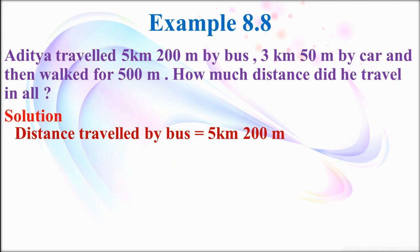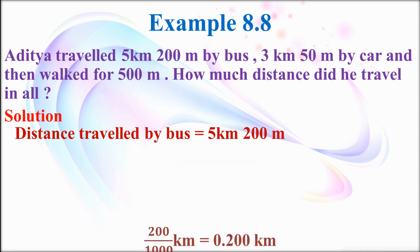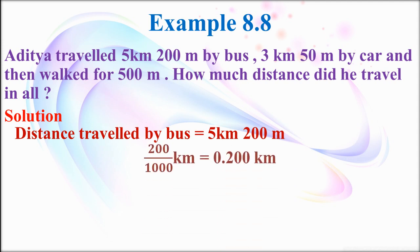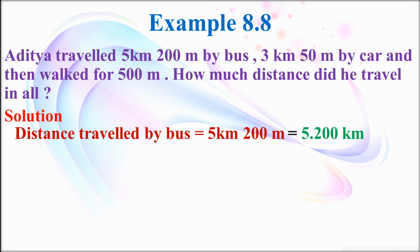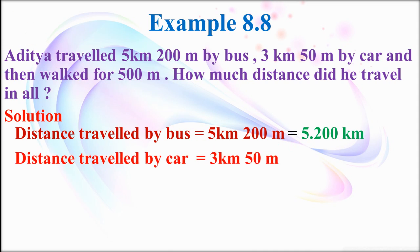That means 200 meter equals 200 divided by 1000, which in decimals is 0.200 kilometer. Now add with 5 kilometer to get 5.200 kilometer. Then for the distance traveled by car, the units are again different, so we convert from smaller unit to bigger unit.